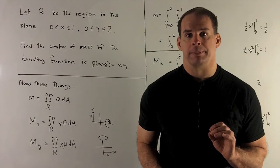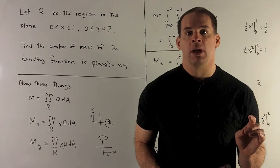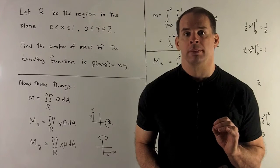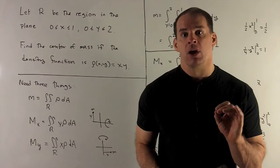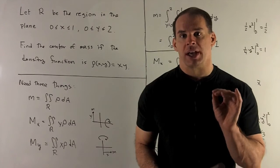Let R be the rectangle in the plane, x goes from 0 to 1, y goes from 0 to 2. Find the center of mass if the density function is given by rho of xy equals x times y.